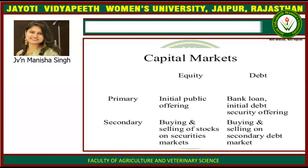Then capital markets. Primary equity is initial public offering, and primary debt is bank loan, initial debt, and security offering. Secondary equity is buying and selling of stocks on securities markets, and secondary debt is buying and selling on the secondary debt market.